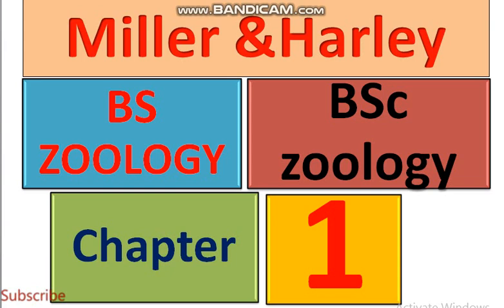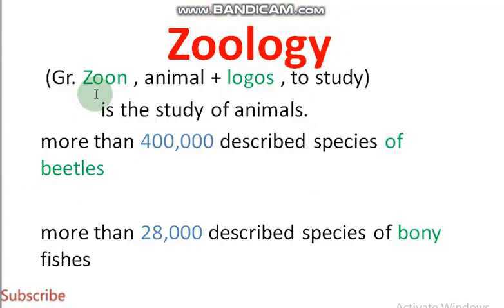Welcome to Khan Bio Education. Today we will learn about chapter number one of BS Zoology, Miller and Harlow. Zoology is the combination of two Greek words: 'zone' meaning animal, and 'logos' meaning to study. So zoology is the study of animals.